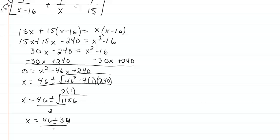If we do 46 minus 34 we only get 12, and 12 minus 16 gives a negative number, so we don't want the subtraction. We want 46 plus 34, which gives us 80. So 80 over 2 gives us 40.